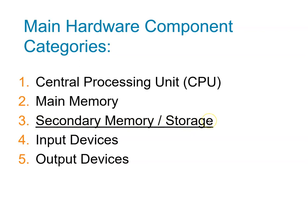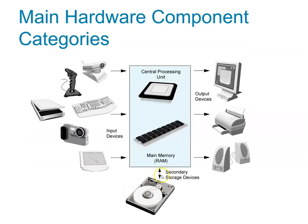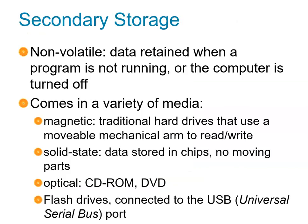Now let's look at secondary storage. Secondary storage is where you load data from into main memory. Earlier I said main memory is volatile — but secondary storage is the opposite: it's non-volatile. If you unplug your computer, you will not lose your data. For example, if you already saved an essay and someone unplugs your computer, when you turn it back on your essay will still be there. Secondary storage data is retained when the program is not running or the computer is turned off.